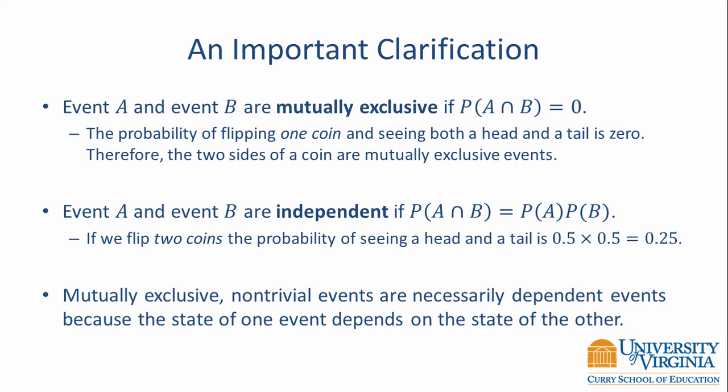Mutually exclusive non-trivial events are necessarily dependent events because the state of one event depends on the state of the other. It's important to keep these two terms in mind and distinguish between them. Mutually exclusive events simplify our use of the addition rule, and independent events simplify our use of the multiplication rule. Examples of using the multiplication rule in this video always assumed independent events. If we cannot make this assumption, we have to use conditional probability, which is the subject of a different video.